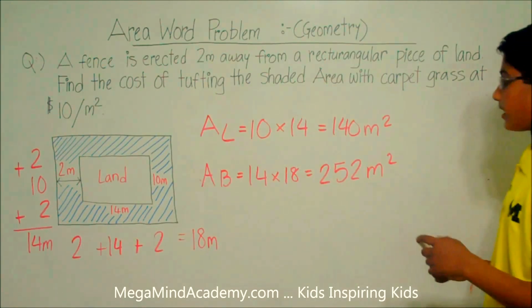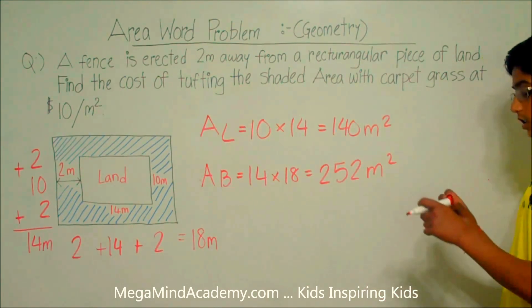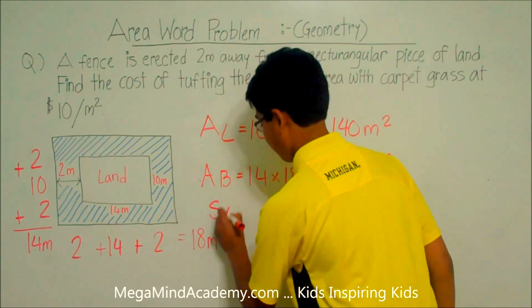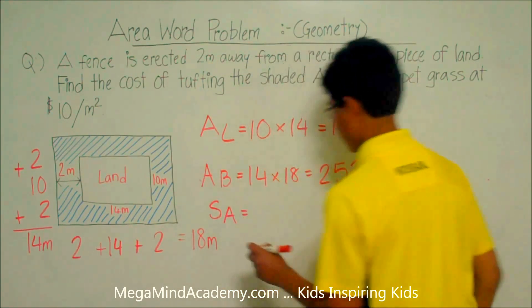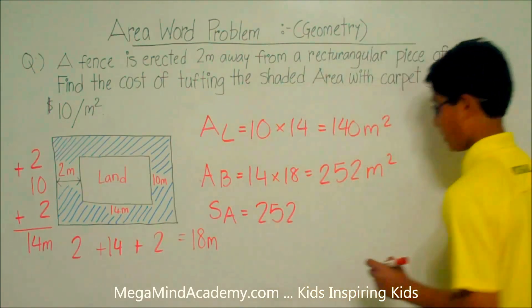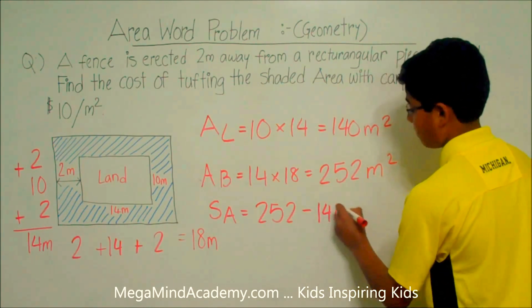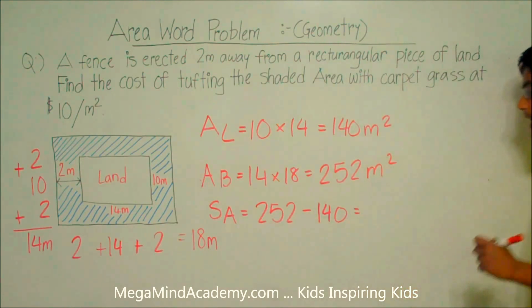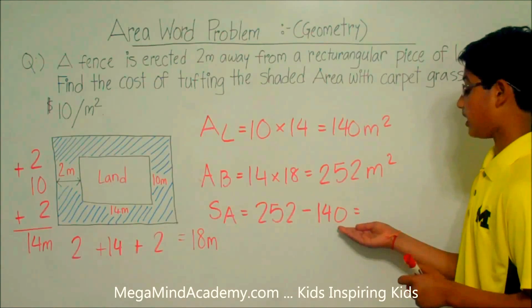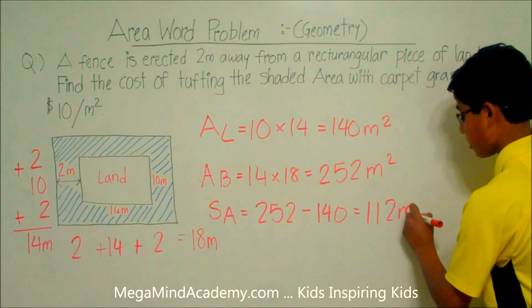Now let's subtract the area of the land from the area of the big rectangle. The shaded area — S_A for shaded area — is equal to 252 meters squared minus 140 meters squared, which is equal to 112 meters squared.